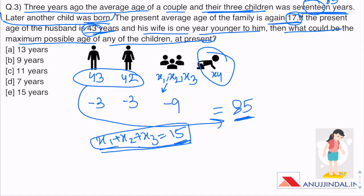Three years ago, the average age of a couple and 3 children was 17 years. This means 3 years ago, 3 children were present. So the minimum age any one of them could have is 3 years. We have to find the maximum possible value of any of the children. So if we assume that 2 of the 3 children have the minimum age, which is 3 and 3, we will get the maximum age for the third one, which would be 9 in this case, because their sum has to be 15 years. So we get the answer - it is 9 years.